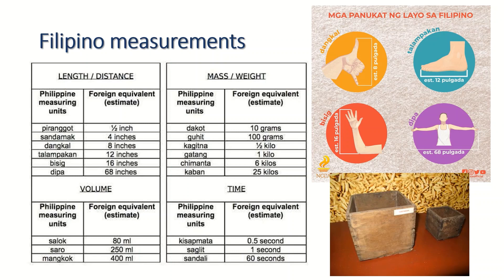Here are some traditional measurements we hear from our own folks. You might be familiar with some like dangkal and dipa, which are used to measure length or distance. Sometimes you might hear elders use the terms dakot, gatang, or kaban to refer to rice measurements. You may also hear kisamata, saglit, or sandalit used to refer to time.